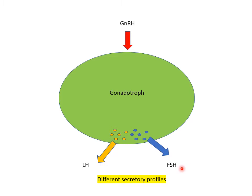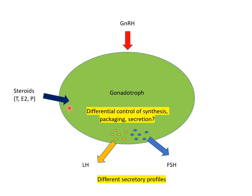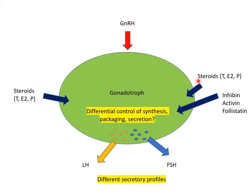These two hormones certainly have different secretory profiles in the blood. LH tends to be much more pulsatile, while the fluctuations in FSH are much more gradual. There must be some kind of differential control of the synthesis, packaging and secretion of these two hormones. There are certainly other inputs into the gonadotroph apart from GnRH — feedback from gonadal steroids, particularly testosterone, estradiol and progesterone. FSH is also affected by inhibin, activin and follistatin feedback as well.